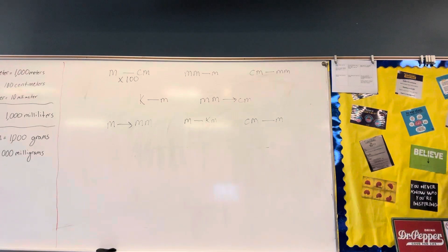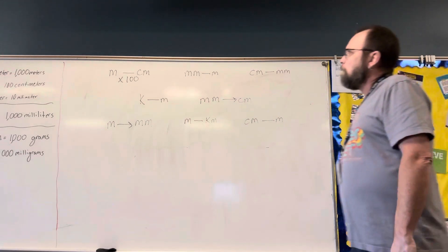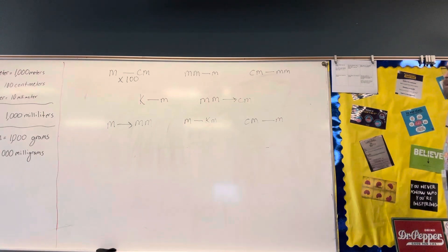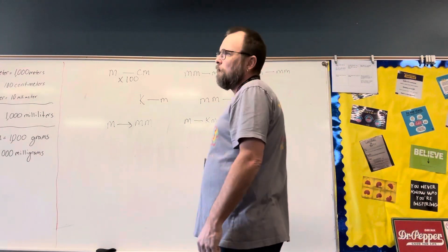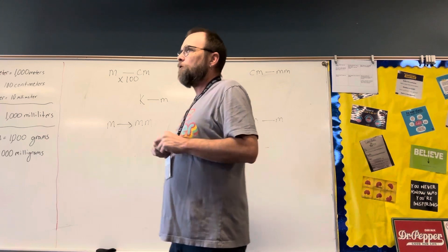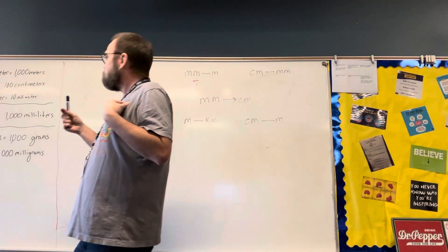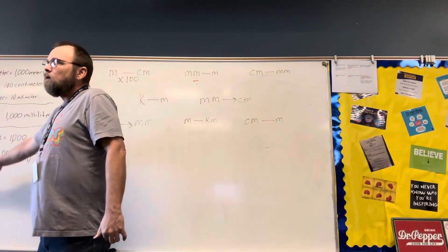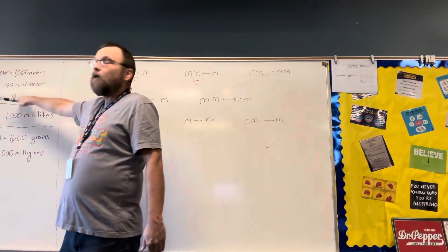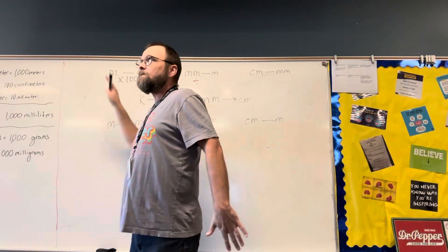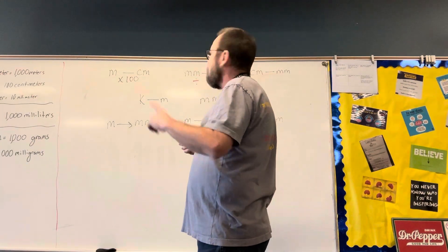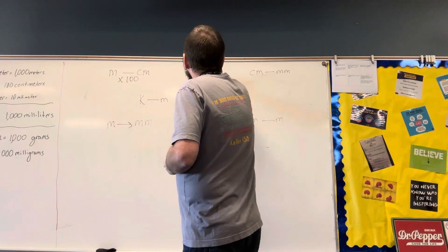If we are going from millimeters to meters, Manil — millimeters to meters — are we going to multiply or divide? Divide. Why? It's going from smaller to bigger. And how many millimeters are in a meter? A thousand. All of these tie together — that's why the metric system is so much easier. So this one you're dividing by one thousand.